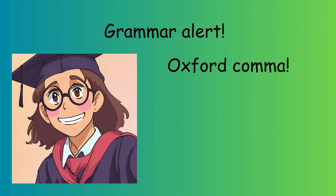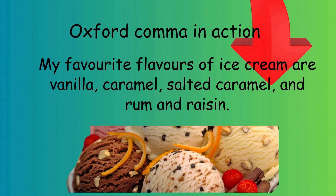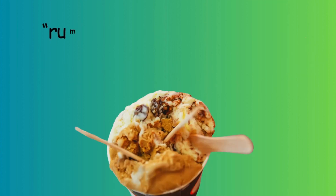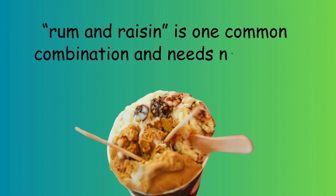And that's today's grammar alert. The Oxford comma is the comma that we use before the 'and' to make the meaning of a sentence perfectly clear. For example: 'My favorite flavors of ice cream are vanilla, caramel, salted caramel, and rum and raisin.' Rum and raisin is one common combination, and that does not need a comma.